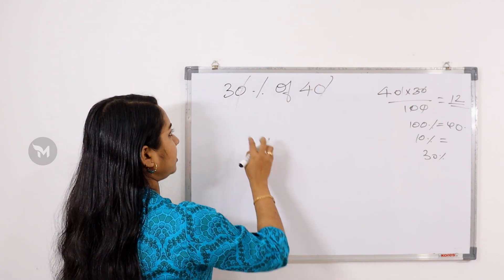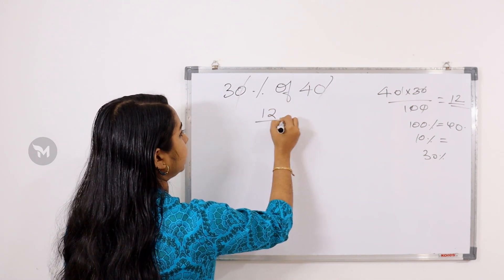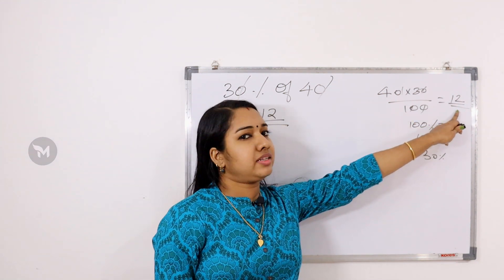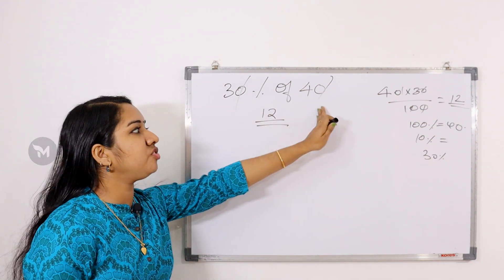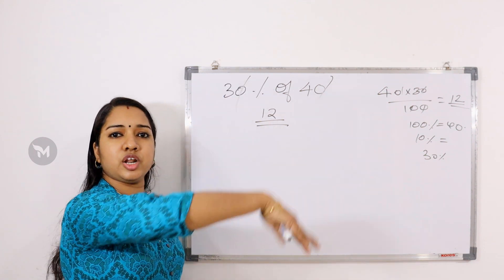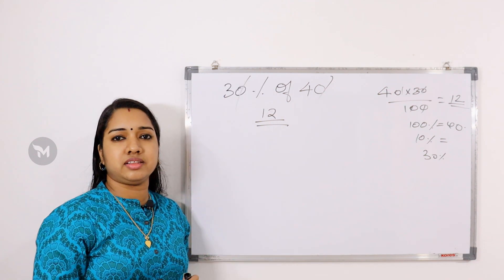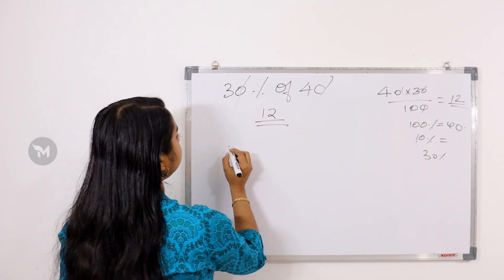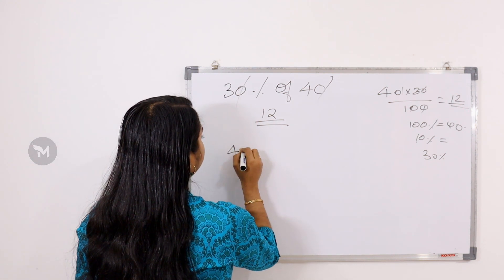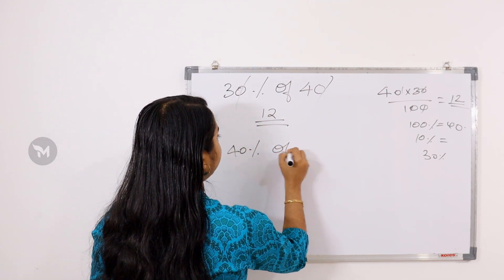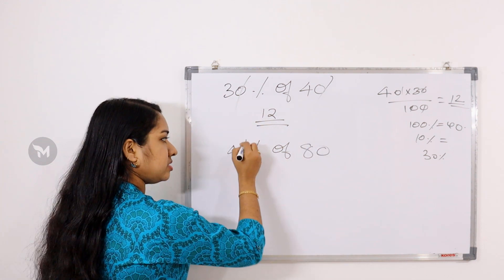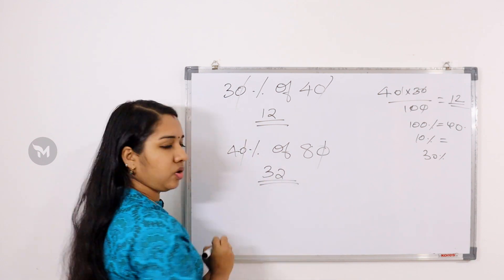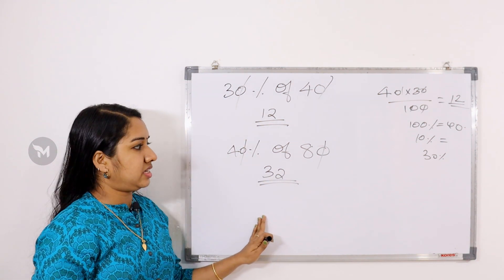You write 12 as the answer. So 30% of 40 gives you 12. Now, 40% of 80 — you will find 32 as the answer.